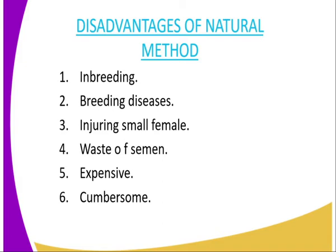Then we have injuring of a small female. In the natural mating method, a bull may be very heavy, and if it mates with a very small cow, it might end up injuring the small cow. Then we have wastage of semen — in one ejaculation the bull releases millions of sperms, but only one sperm is actually required for fertilization, leading to wastage of semen.